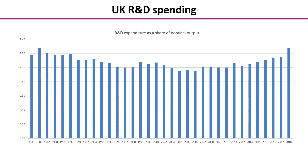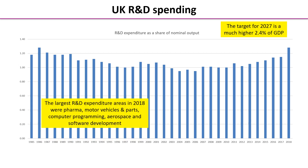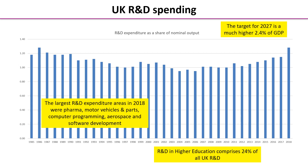The next chart shows the UK's R&D spending, which is really quite low compared with some of our competitor countries. You'll see from the screen there's a target for 2027 to try and hit 2.4% of GDP, which is pretty well double what we've currently got. The highest amounts of R&D are in sectors such as pharmaceutical, automotive, aerospace, and IT. Higher education accounts for about a quarter of all UK R&D spending.